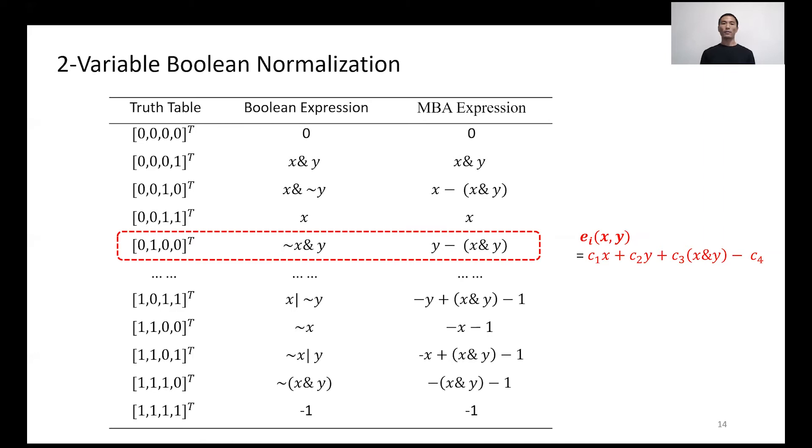Our interesting finding is that all 16 cases can be represented as a linear combination of X, Y, X AND Y, and negative one. In other words, any two-variable one-bit expression E can be transformed to an MBA expression with the general form C sub 1 times X plus C sub 2 times Y plus C sub 3 times X AND Y minus C sub 4. For example, the truth table is transformed into Y minus X AND Y.